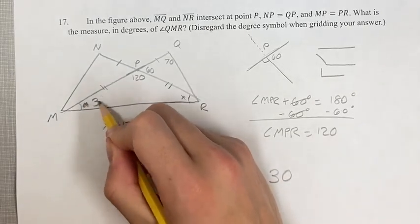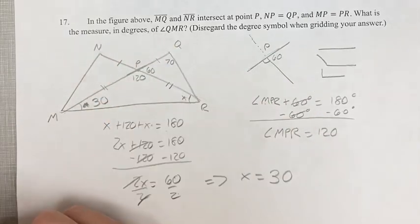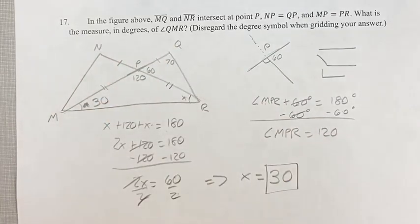X is equal to angle QMR, so the measure in degrees of QMR is 30. That's your final answer. As always, thank you for liking and subscribing, and I'll see you in the next video.